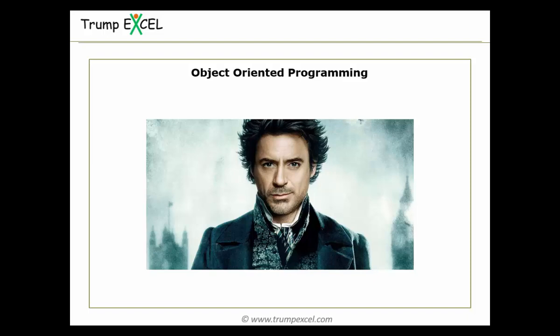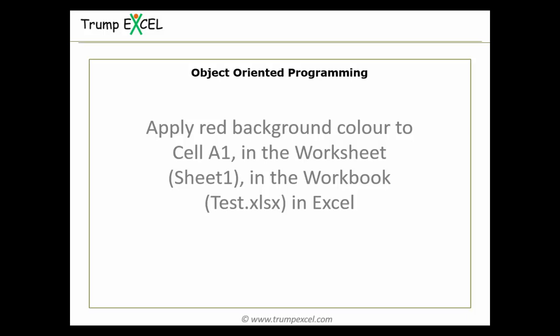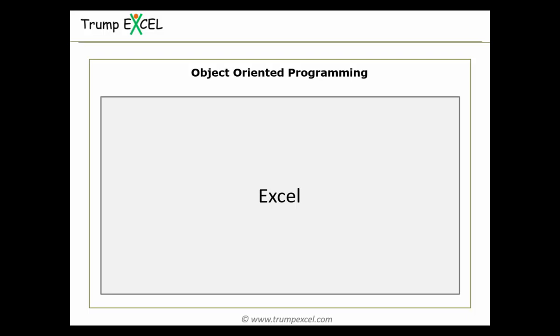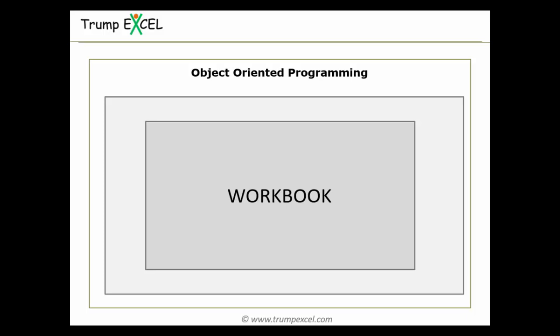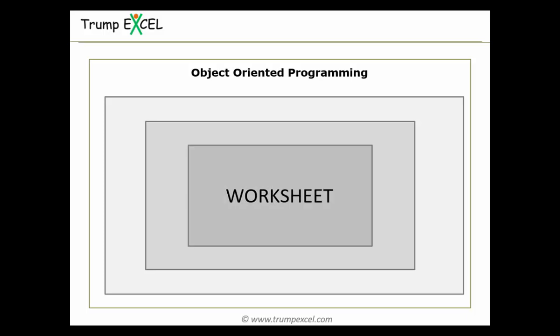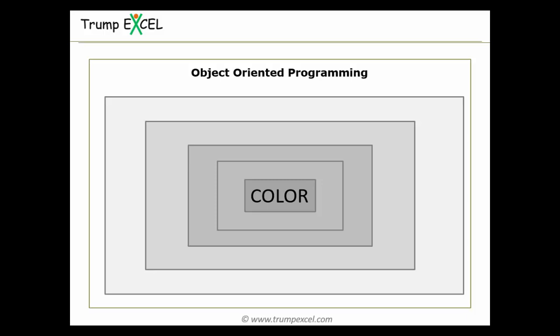Now let's look at this example in terms of Excel. Let's say I have to apply a red background color to cell A1 in the worksheet named Sheet1, in the workbook named test.xlsx, in the application which is Excel. Again I have an address, and I start from the broader level. I would tell VBA that I need to do something within Excel, and within Excel I need to jump into a workbook — the name of the workbook is test.xlsx. Within that workbook I would have a worksheet named Sheet1, and within Sheet1 I go to the range A1 and change the color.